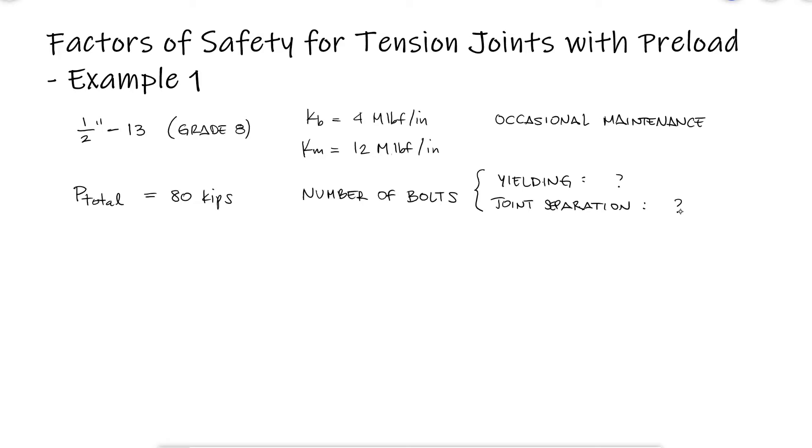To answer the first question, we can assume a yielding factor of safety equal to 1, solve for the number of bolts, and round that number up.